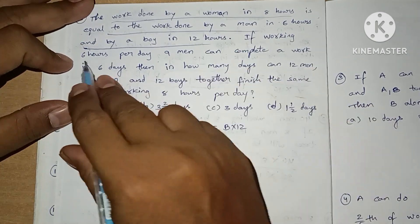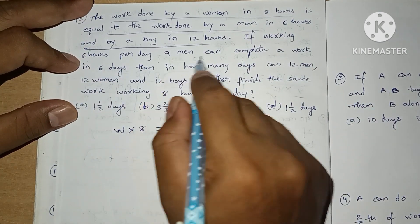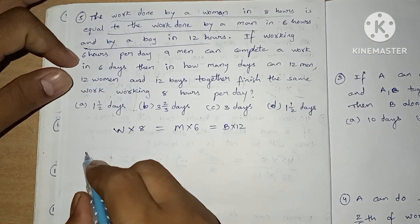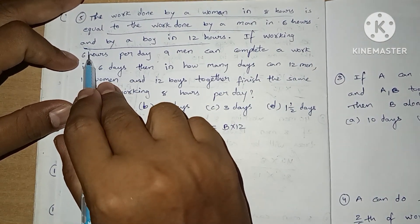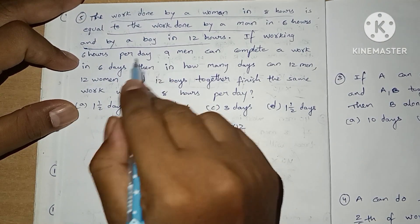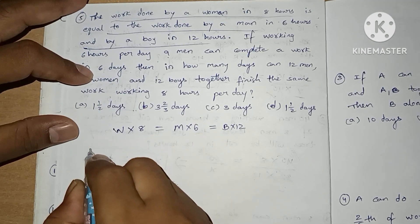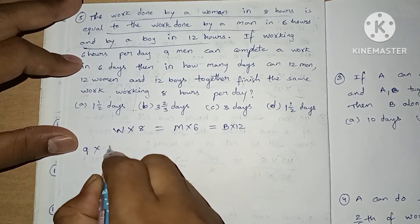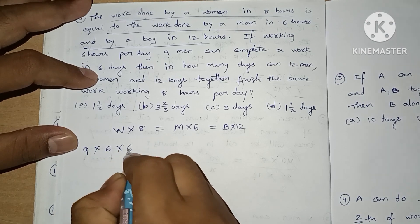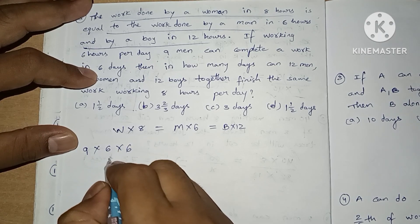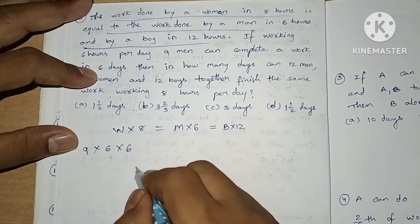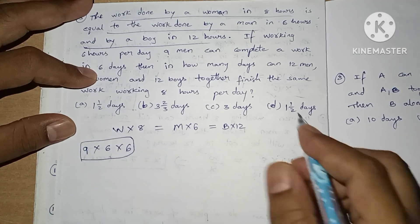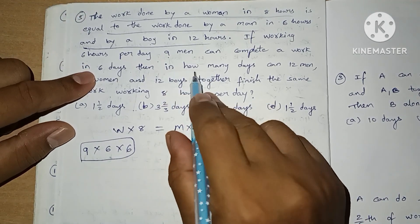Working 6 hours per day, 9 men can complete a work in 6 days. So we have hours, persons, and days. We write 9 × 6 × 6 — this is the PhD calculation. We get the total work as 10.